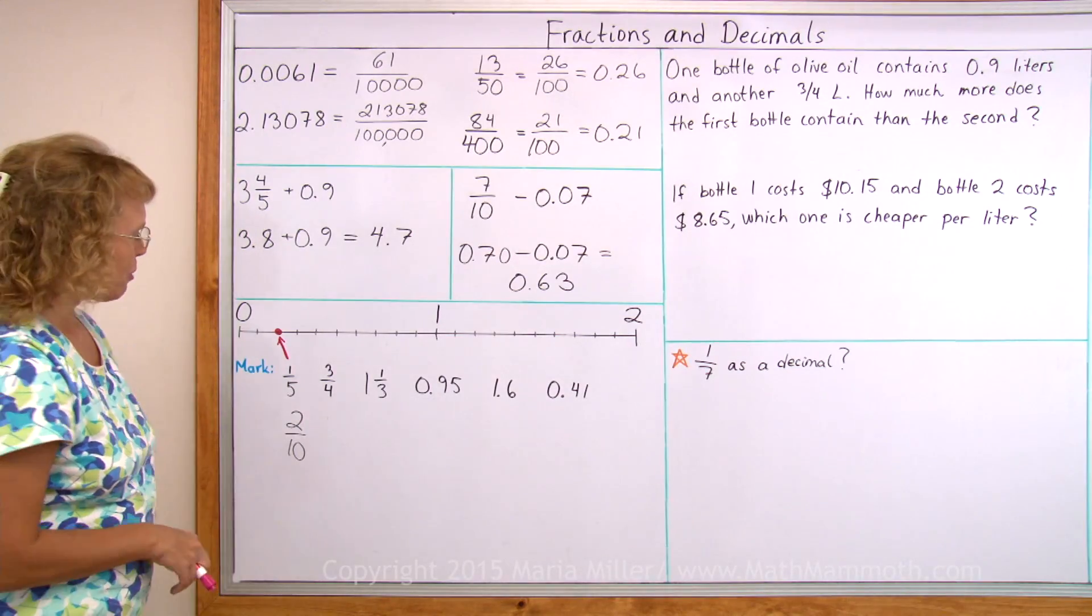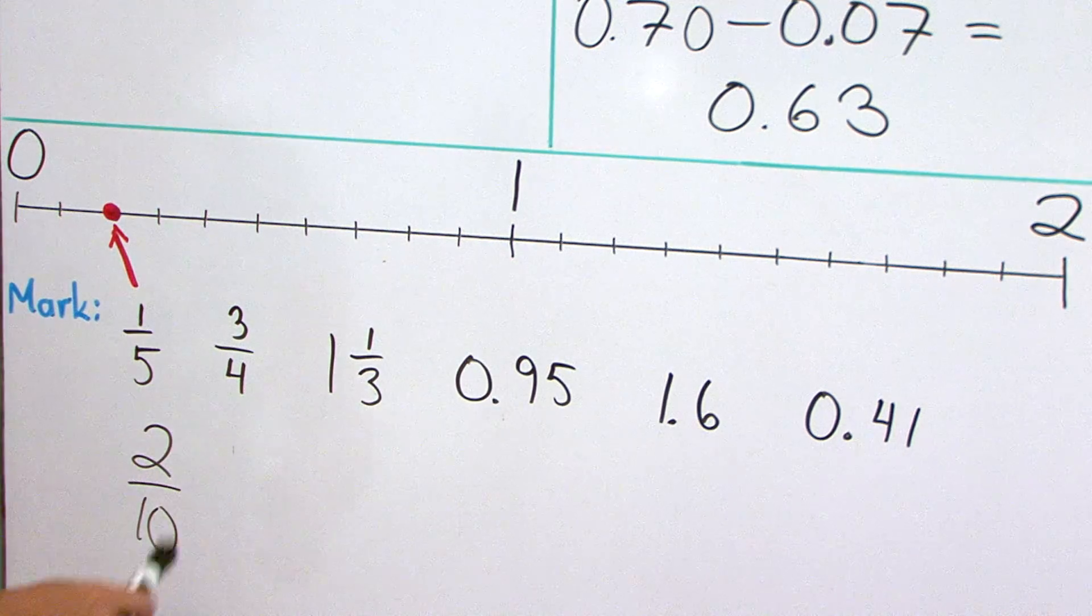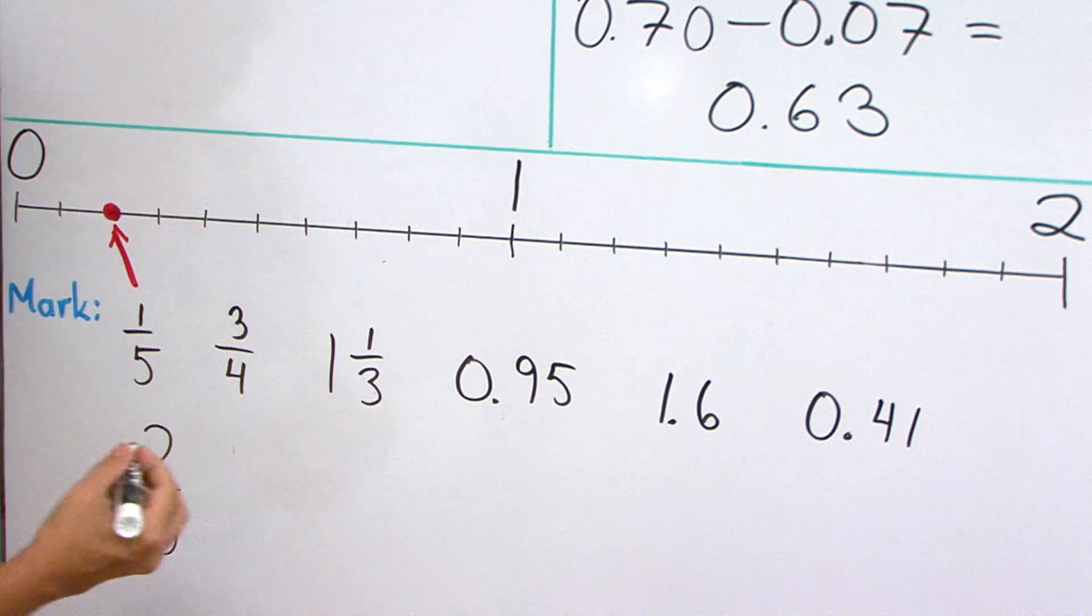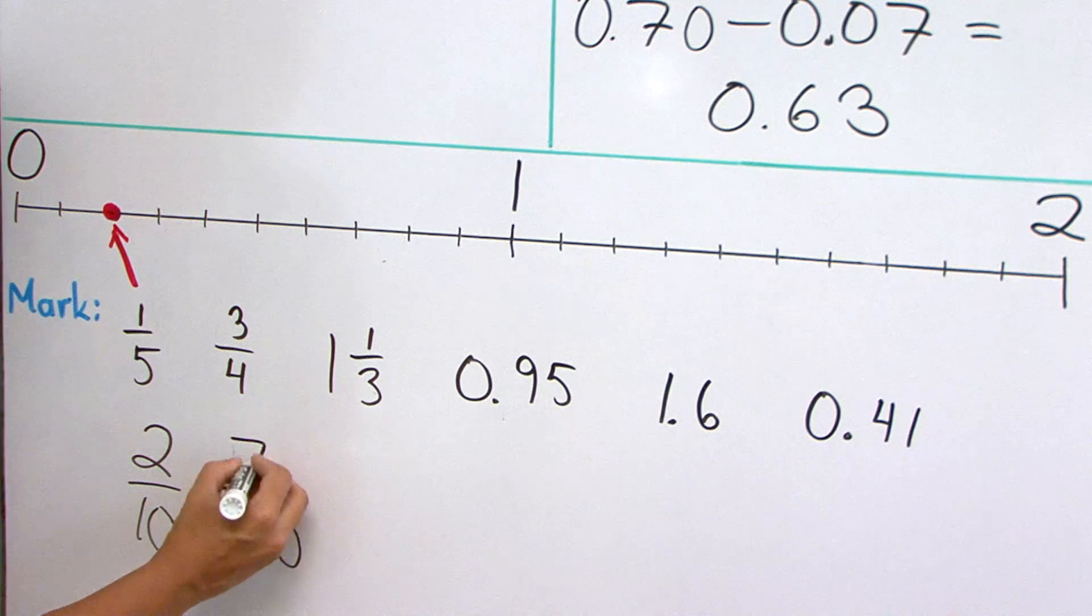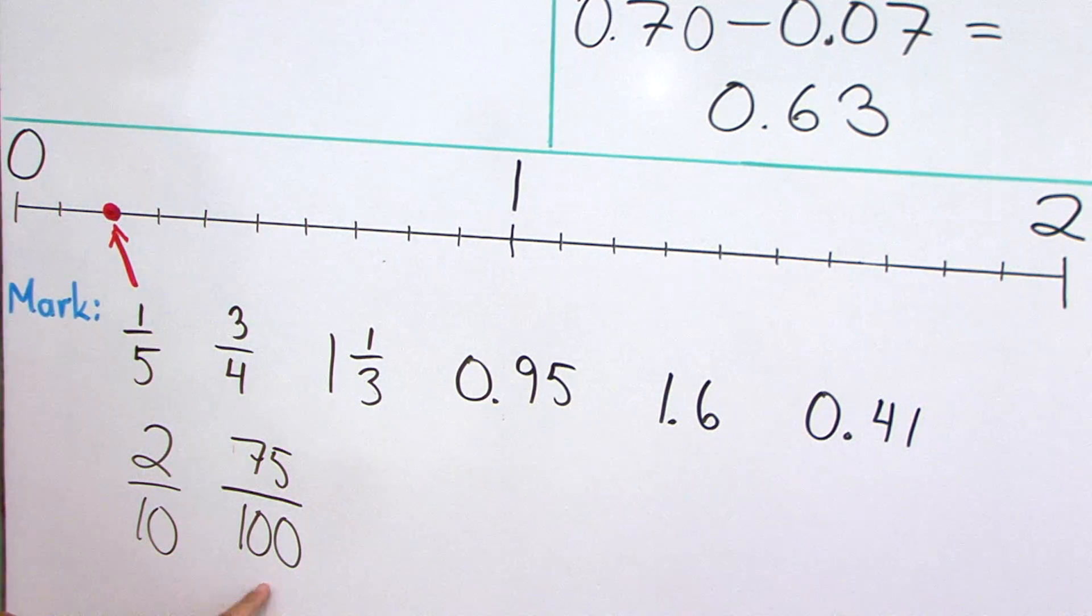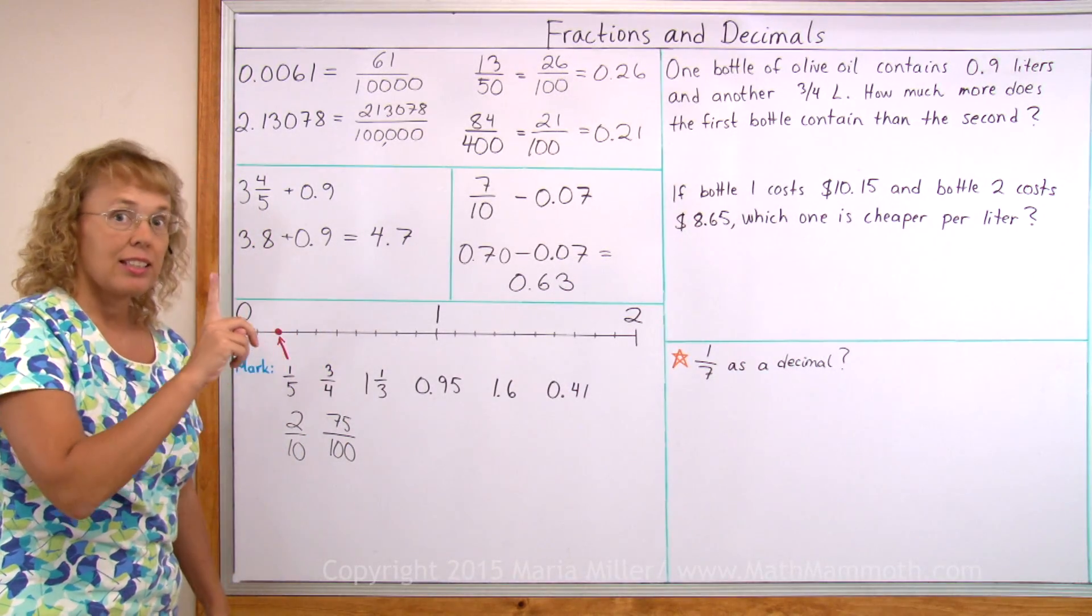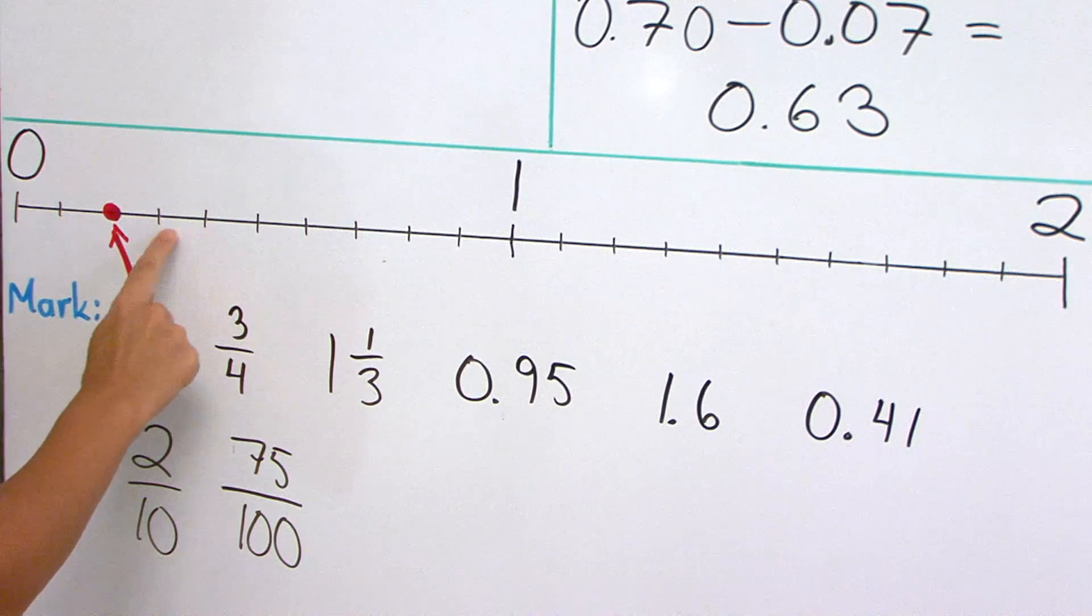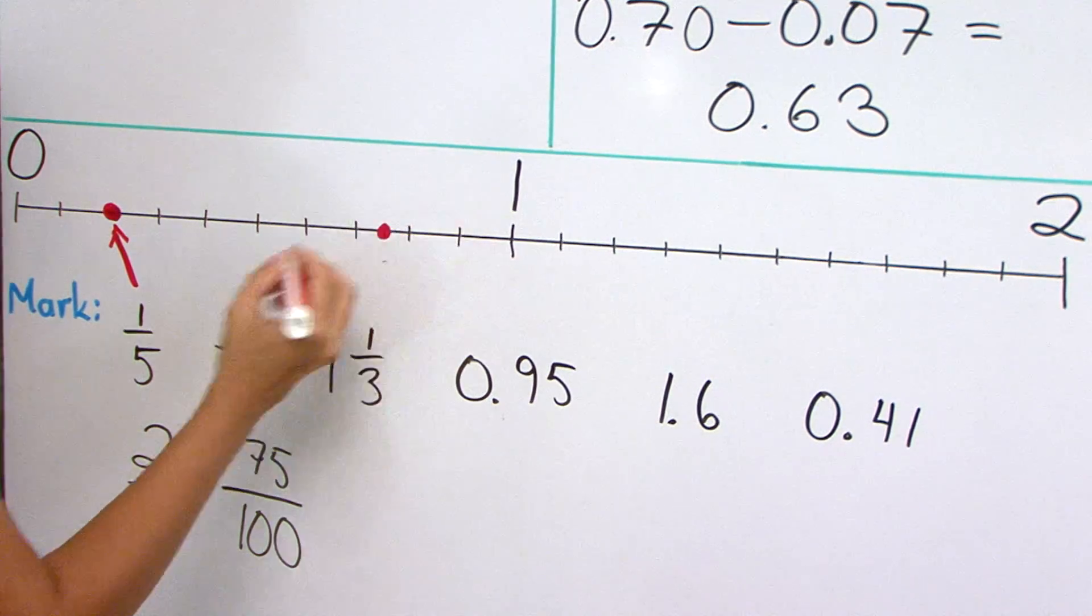Three-fourths. Where would that be? My number line is divided into tenths. And three-fourths is not so many tenths. It does not go evenly. Four does not go evenly into ten, so I could write it like that. But it is equal to another fraction with a denominator of hundred, and that is seventy-five. And I think we can find seventy-five hundredths here because it happens to be midway between seven and eight tenths. It's midway between seventy and eighty hundredths, or seven and eight tenths. Three, four, five, six, here's seven tenths, eight tenths. So over here is three-fourths.